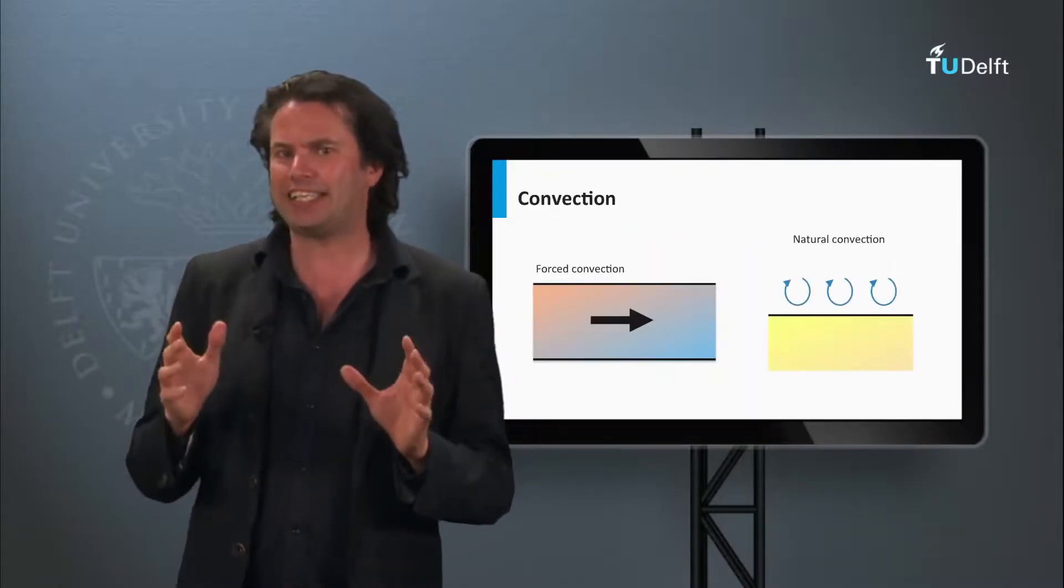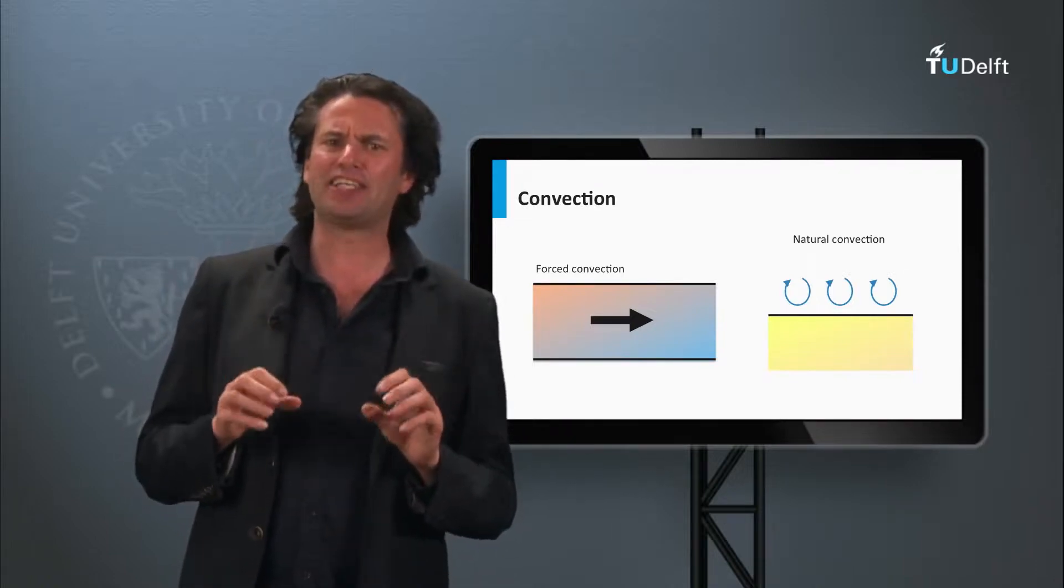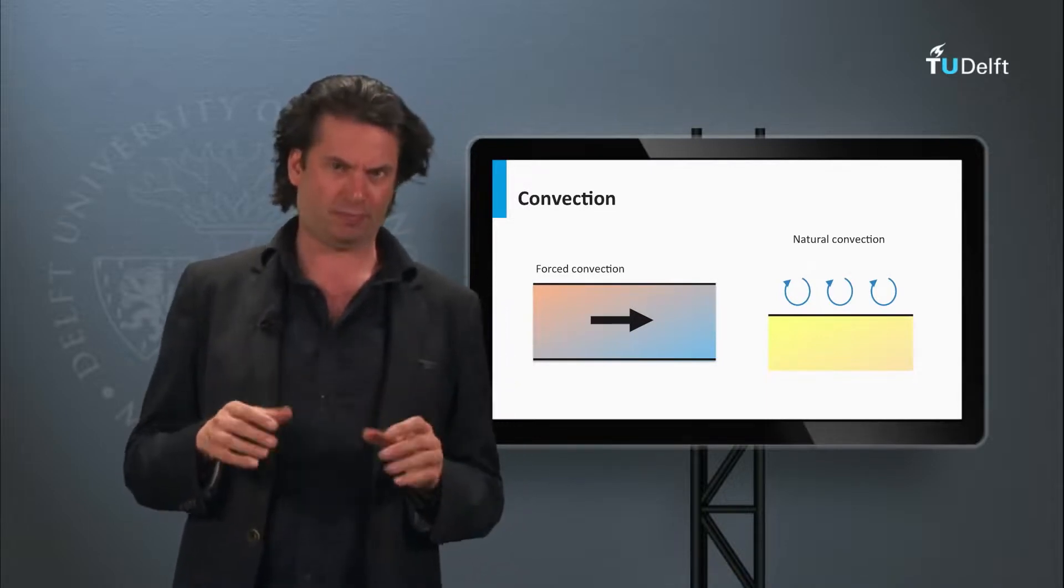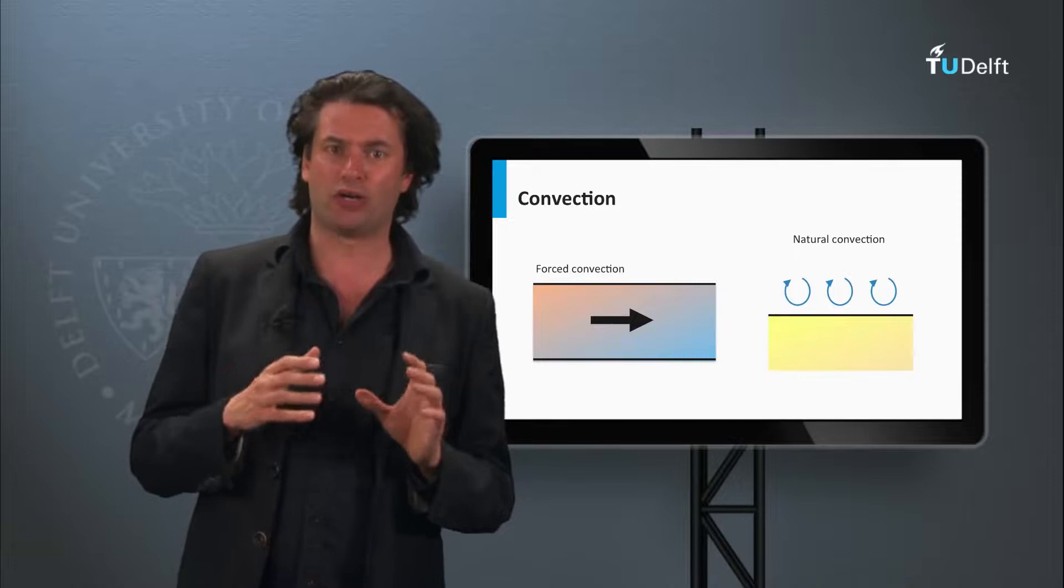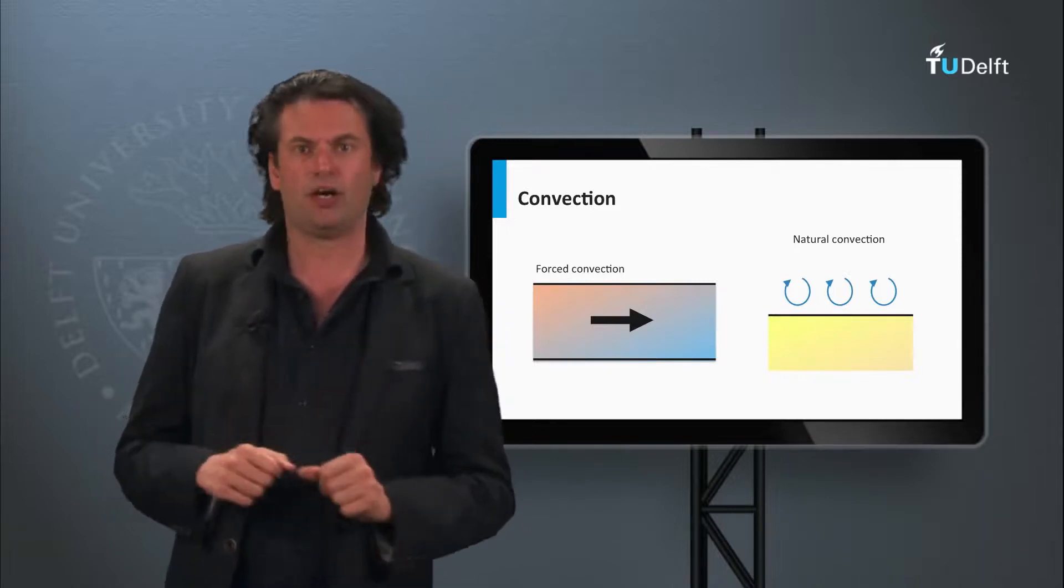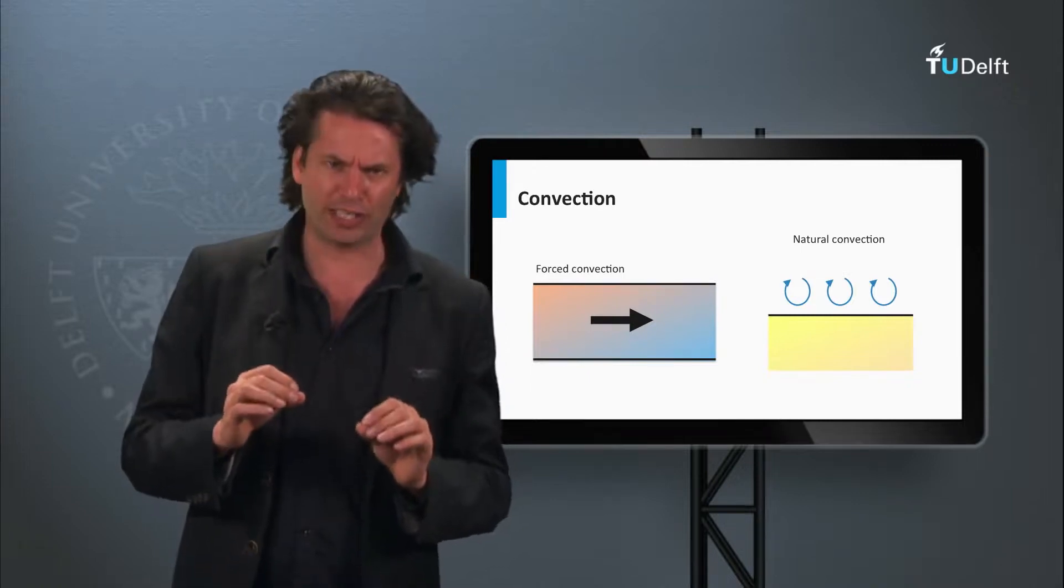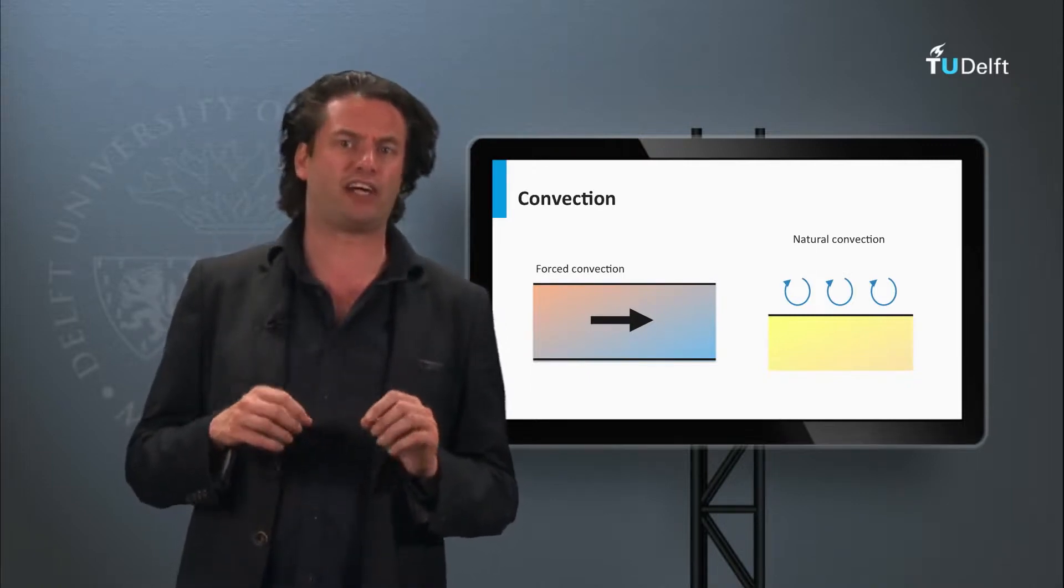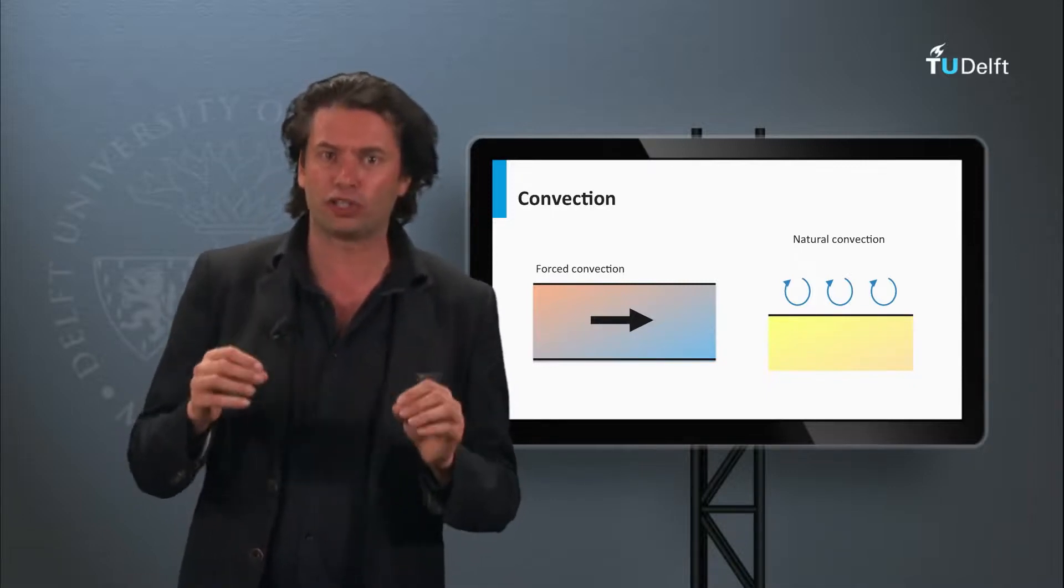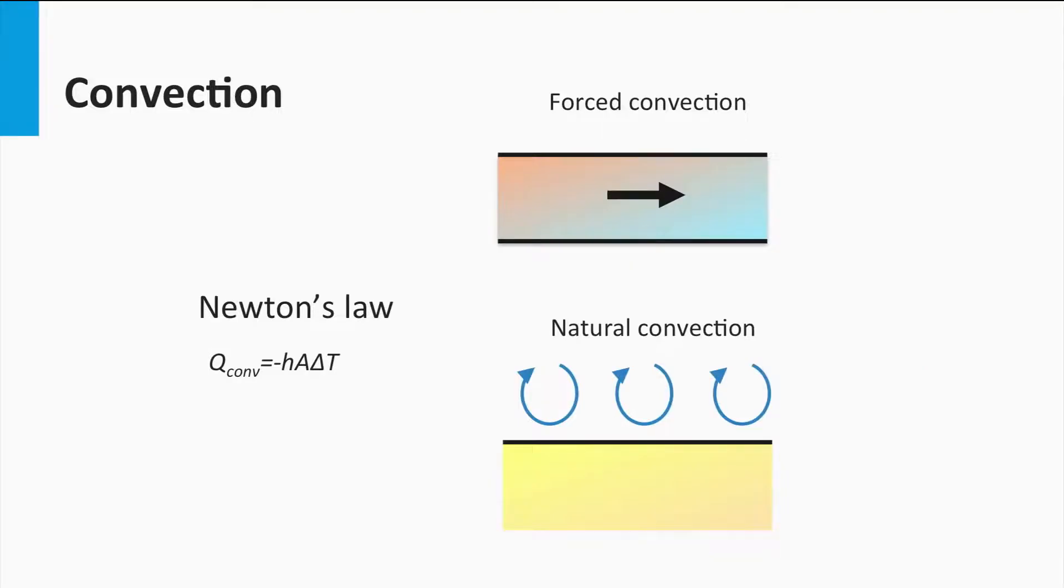Convection is the second possible mechanism for heat transfer. Convection is the transfer of heat by the movement of a fluid. When a moving fluid is hot, it will transport that heat with its mass. Convection can be forced when the movement of the fluid is caused by external variables, or natural, by the density difference caused in the fluid due to the temperature gradients.